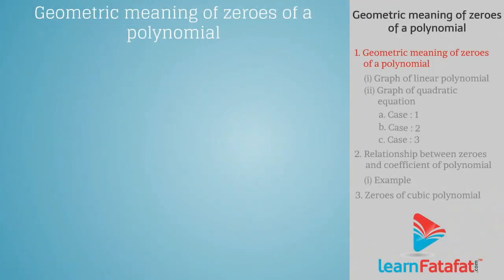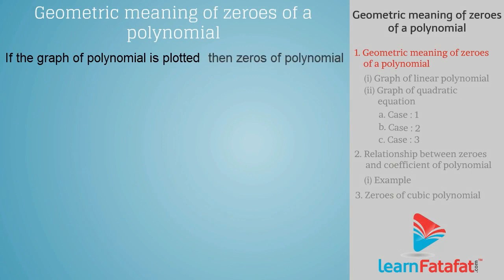Geometric meaning of zeros of a polynomial. If we plot the graph of a polynomial, then zeros of a polynomial signify points of intersection on the x-axis.